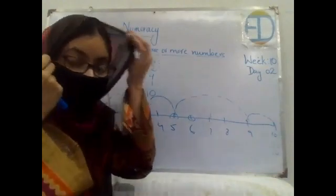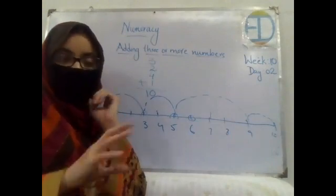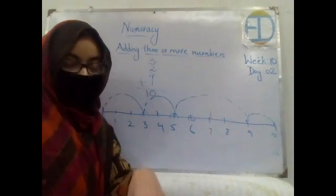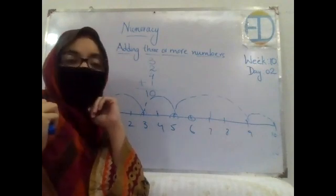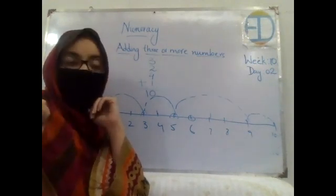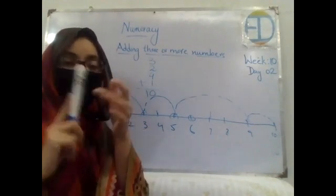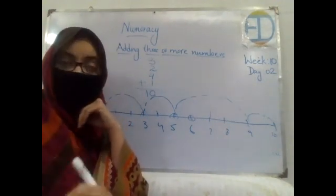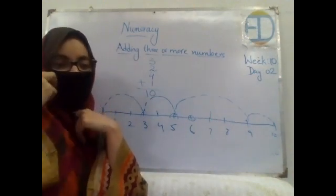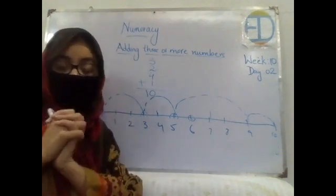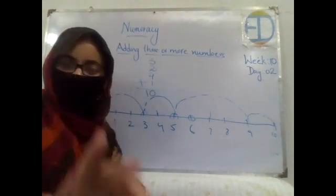Was that interesting? Now draw the number line and I'll tell you numbers to add. The rabbit hops at two, then three, then five. Tell me the numbers and what's the answer? The answer is five. That was all for today. Hope you guys enjoyed the lecture. Do practice it at home and let me know if you have any confusion. I'll be seeing you in the next class. Take care.